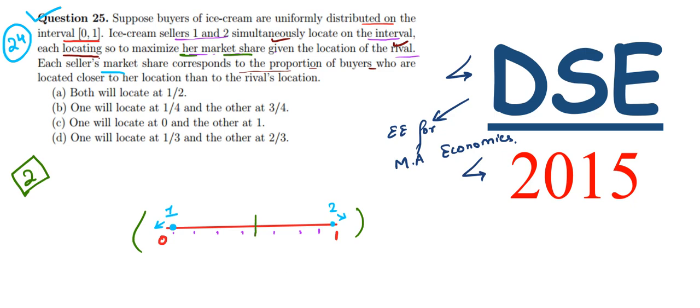In this case, 1 and 2 will try to maximize their market, so what they will do is shift toward the center. Both will shift toward the center. If one shifts toward the center and locates her shop here...